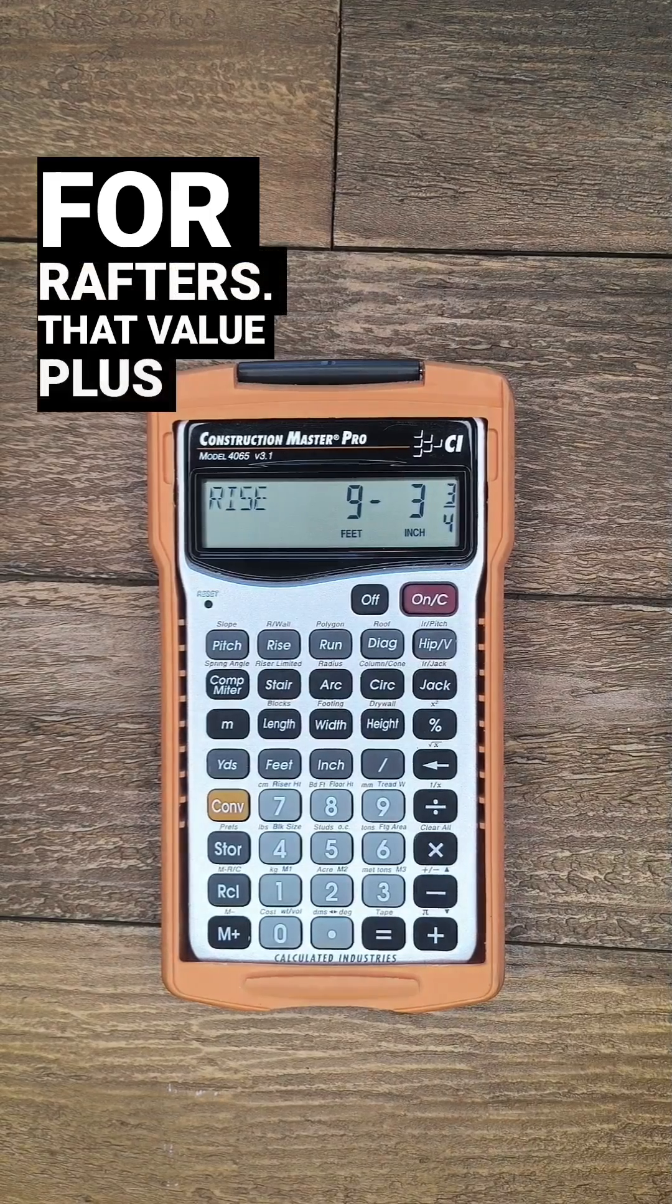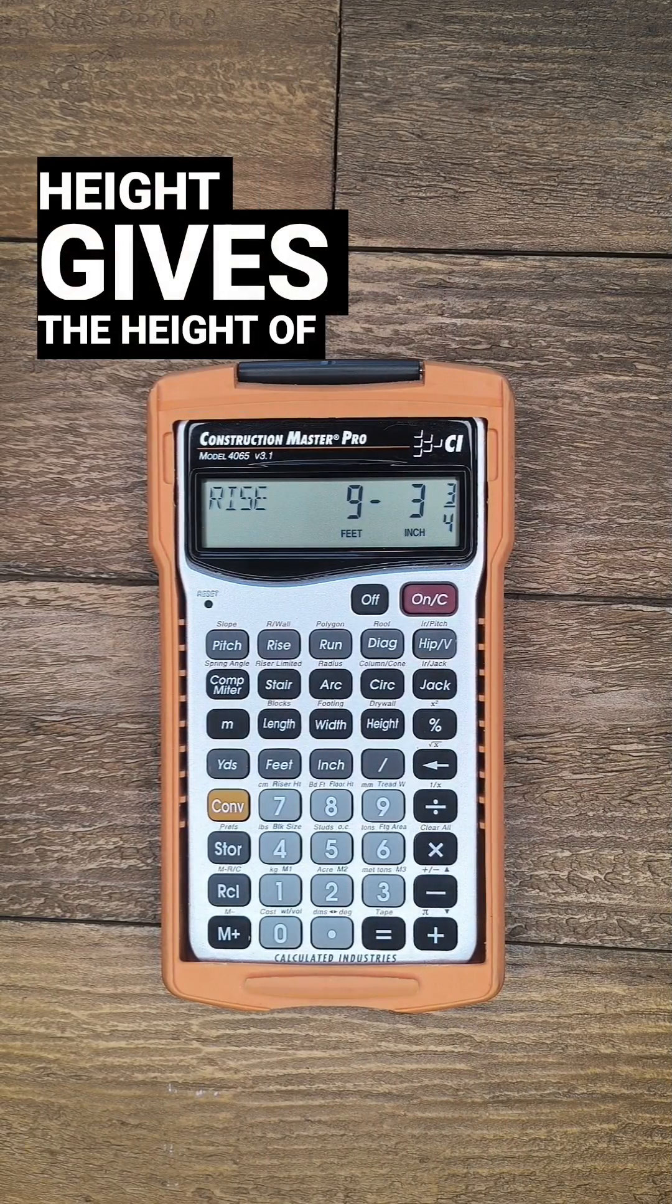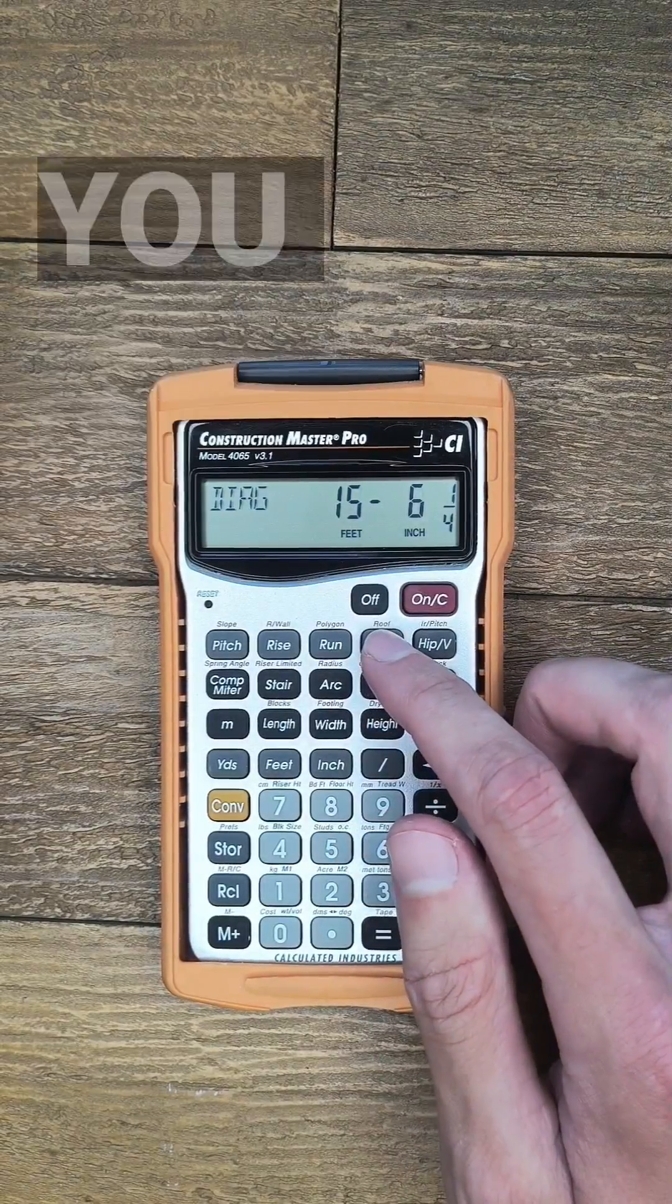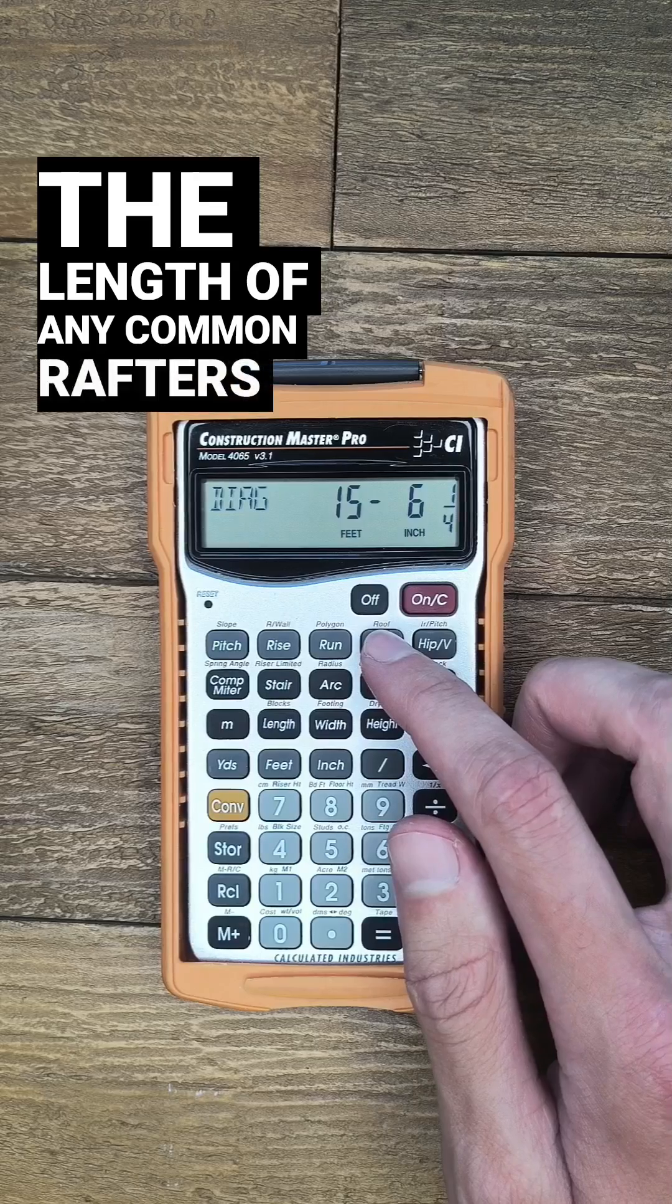For rafters, that value plus the height above plate gives the height of the top of the ridge. Diag gives you the hypotenuse, which will be the length of any common rafters, as well as the plumb and level cut angles.